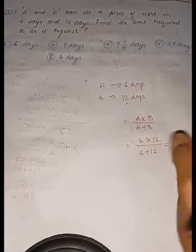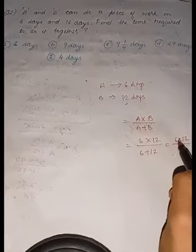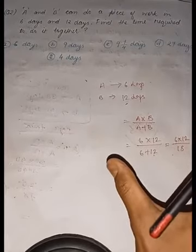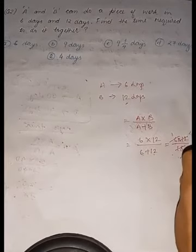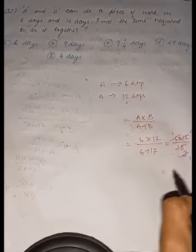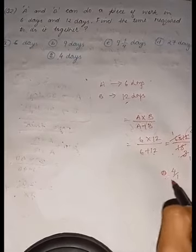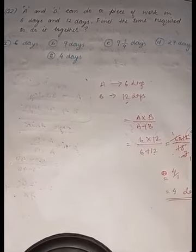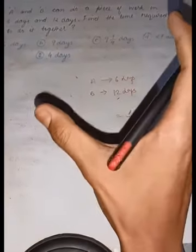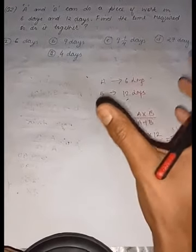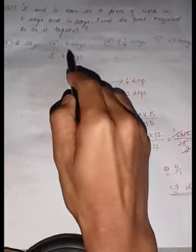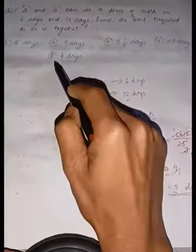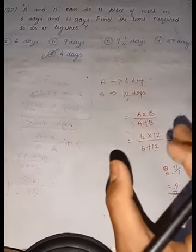6 into 12 is 72, 6 plus 12 is 18. 72 divided by 18 equals 4. Options are: A) 6 days, B) 9 days, C) 9 and 1/4 days, D) 27 days, E) 4 days. So the correct answer is 4 days.